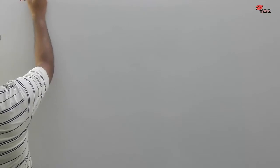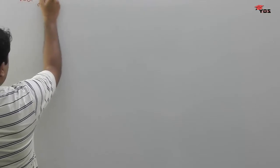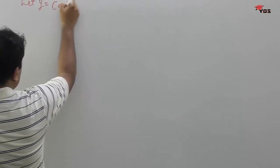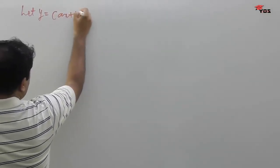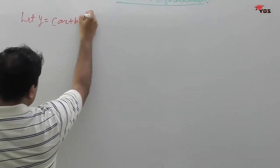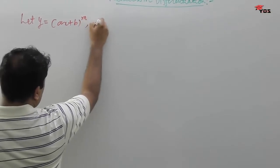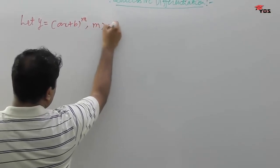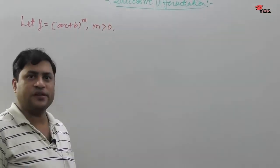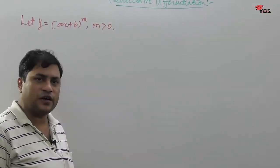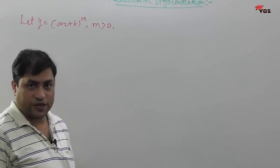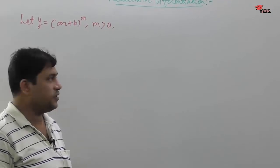Let us consider the first example. We have y equal to (ax + b) raised to m, where m is greater than 0. m is sufficiently large so that we can find the nth derivative.